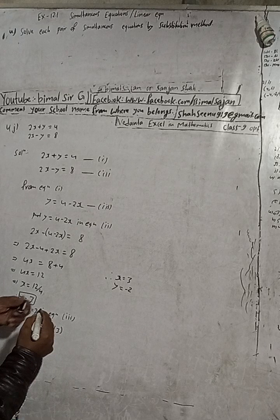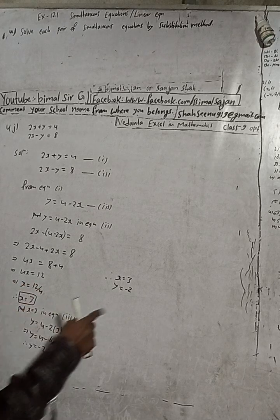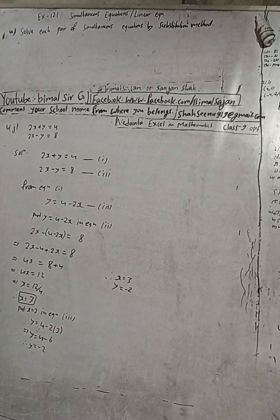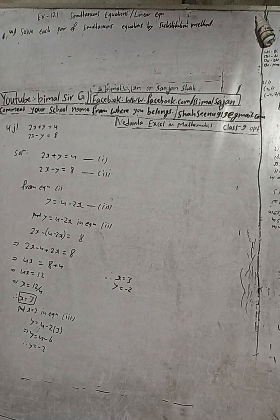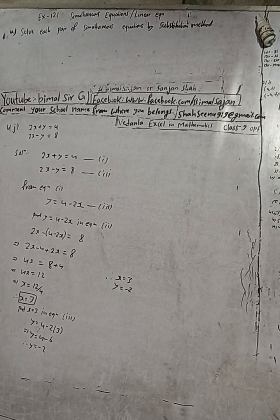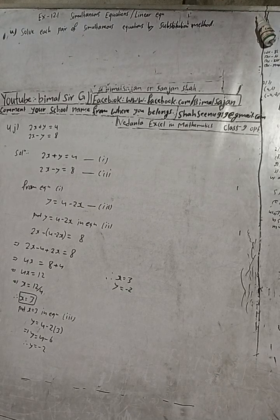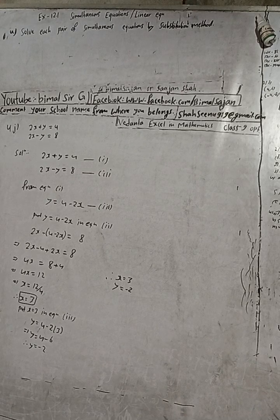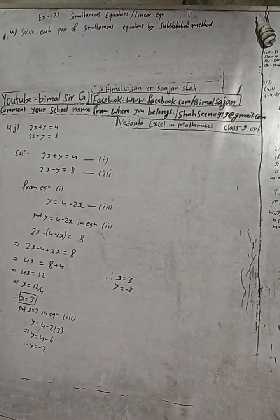So our answer is x = 3 and y = -2. This is the correct answer. They have given this answer in the answer key.